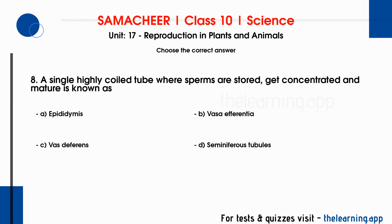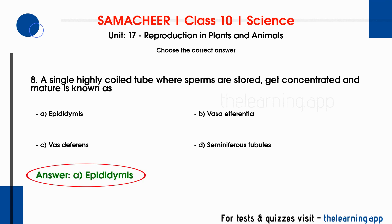Eighth question: a single highly coiled tube where sperms are stored, get concentrated and mature is known as DASH. Options are A. Epididymis, B. Vasa efferentia, C. Vas deferens, D. Seminiferous tubules. The correct answer is option A, Epididymis.